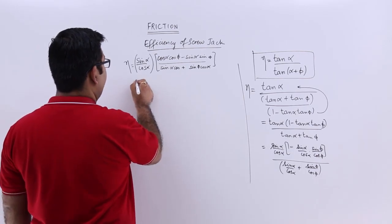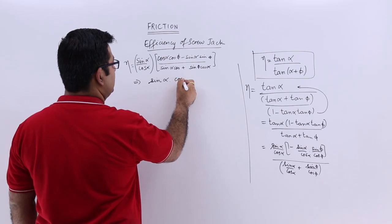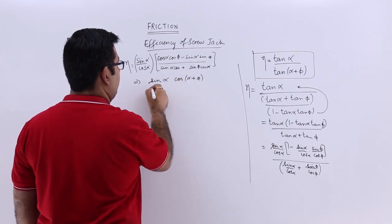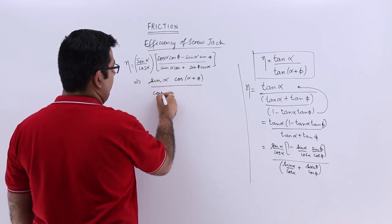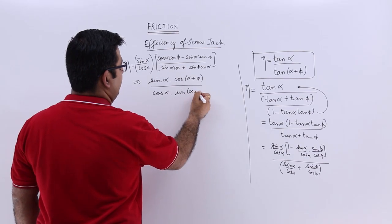Let's move forward. You will have sin alpha into cos alpha into cos alpha plus phi divided by cos alpha into sin alpha plus phi.